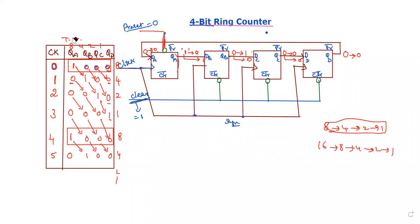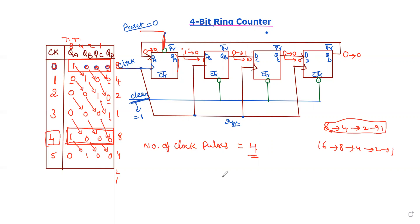So what is the conclusion? For 4 flip-flops, the sequence repeats after 4 clock pulses. The 4th clock pulse brings back the initial 1, 0, 0, 0. The number of clock pulses required to repeat the sequence equals the number of flip-flops. This is nothing but a 4-bit ring counter.